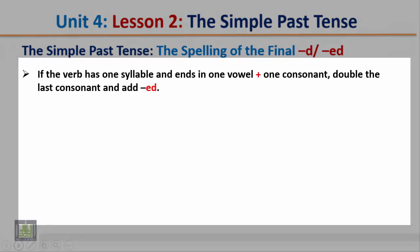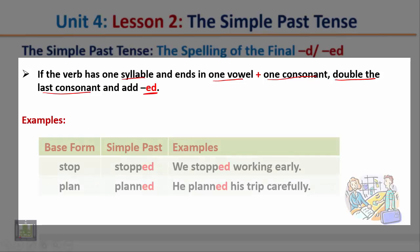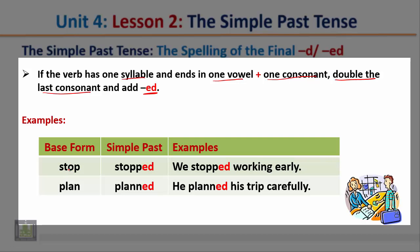Rule 2: if the verb has one syllable and ends in one vowel plus one consonant, double the last consonant and add -ed. For example, 'stop' has one syllable and ends in one vowel plus one consonant, so we double the last consonant and add -ed.